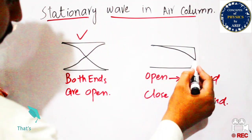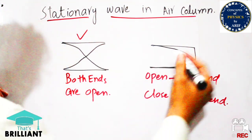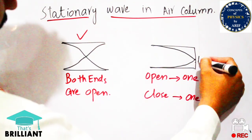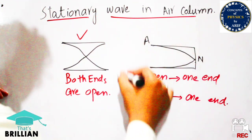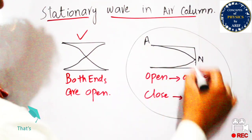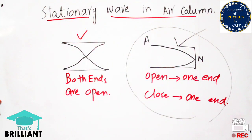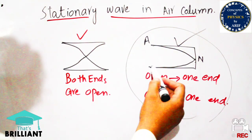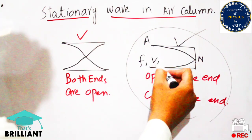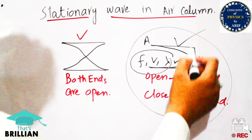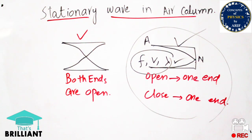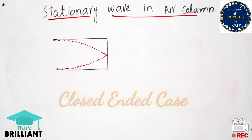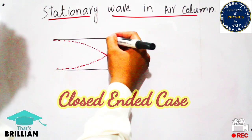In the previous video I discussed the pipe which is open on both sides, but in this video I will discuss the case in which one side is closed and one side is open. We will discuss the frequency, velocity, and wavelength of the wave. As you can see, this is a pipe in which one end is closed and one end is open.